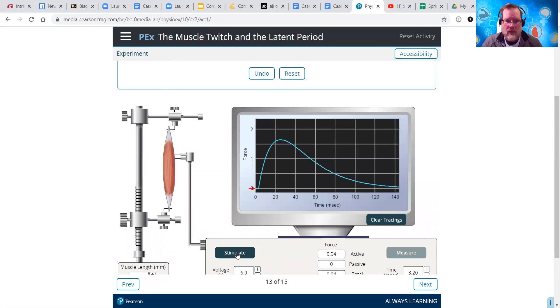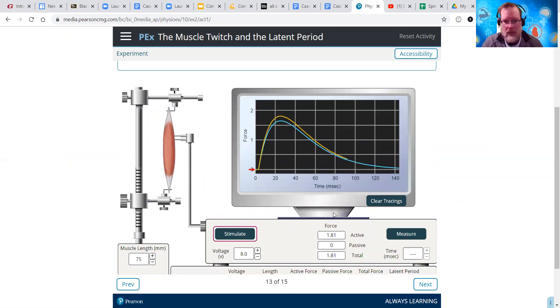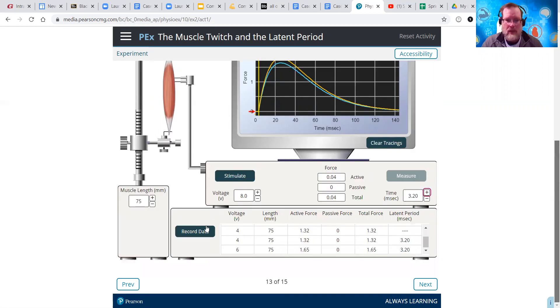We're going to bump it up to 8. Stimulate. You get a little bigger, a little stronger contraction or force of contraction. Which, again, that's not what we're measuring. Latent period looks pretty much the same. So, let's see if that's the case. Still nothing in the 4. Oh, there we go. We generate force right again at 3.2. And you click record data.